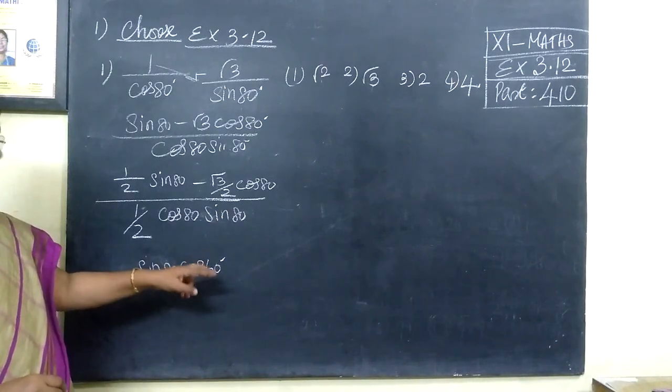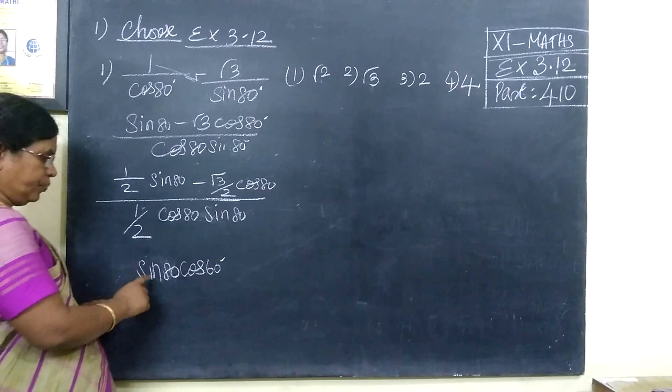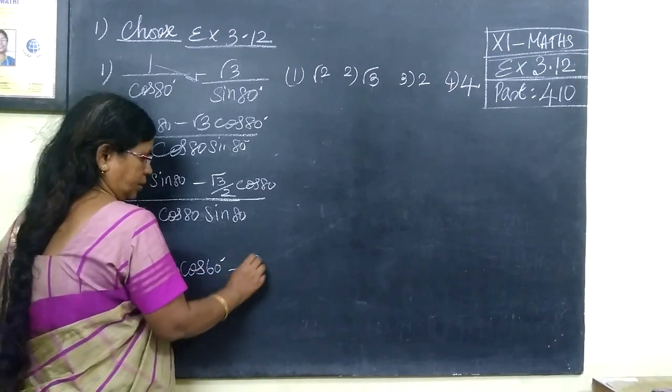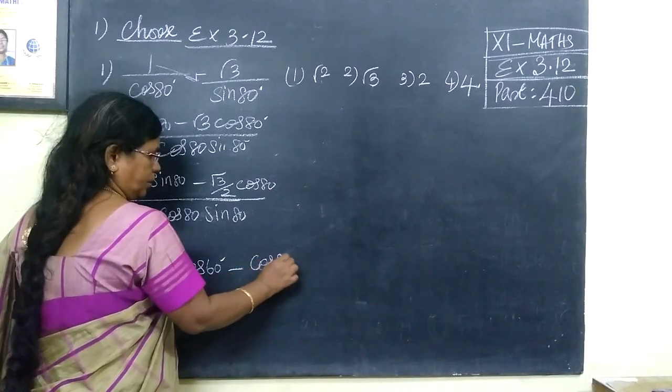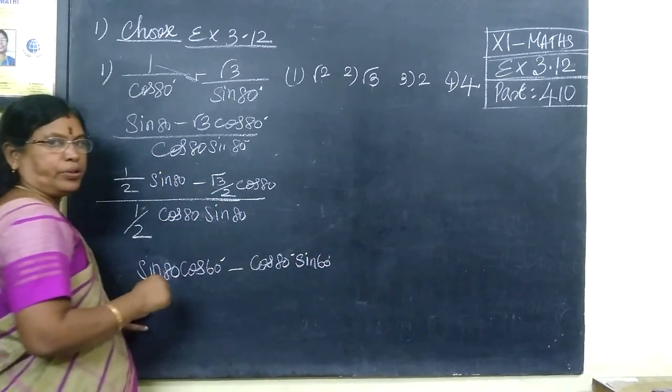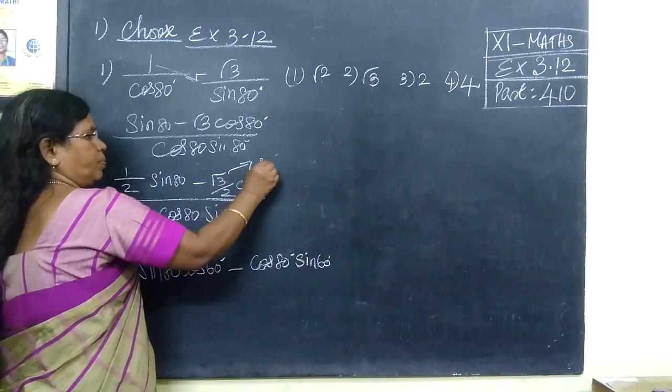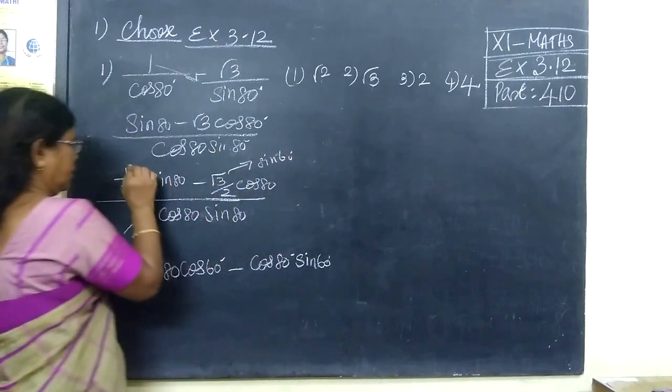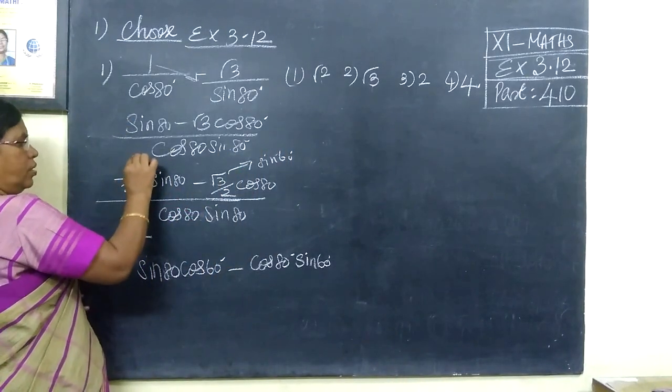Cos 60, sin 60 over root 3 by 2. Root 3 by 2 appears as sin 60 and this one is cos 60.